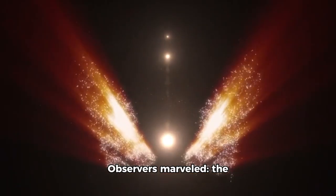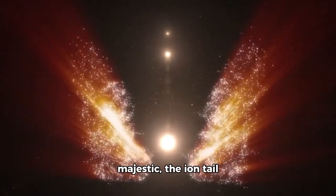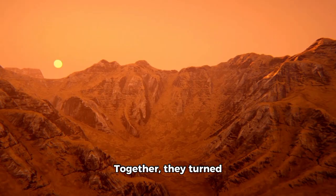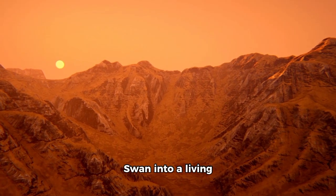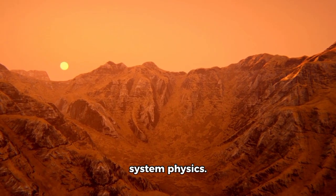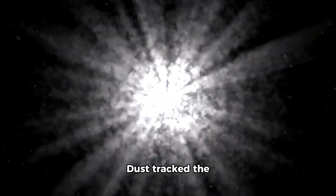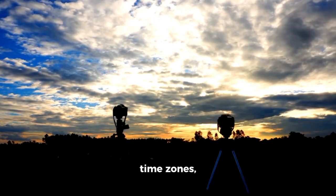Observers marveled: the dust tail steady and majestic, the ion tail restless and alive. Together, they turned Swan into a living laboratory of solar system physics. Dust tracked the comet's past, ions revealed the sun's mood. Across continents and time zones, telescopes—backyard Dobsonians in Cape Town, robotic wide-fields in Queensland—joined the pursuit.